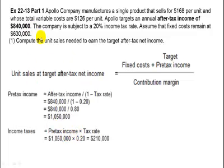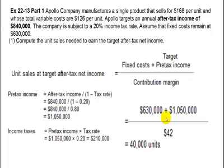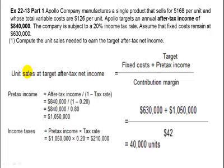Now we can solve Part 1. It's the fixed costs of $630,000 plus the target pre-tax income of $1,050,000 — these two pieces are costs you must overcome to meet the target — divided by the contribution margin of $42. The contribution margin of $42 is the selling price of $168 minus the $126 variable cost. This gives you 40,000 units needed to reach the target after-tax income. That's Part 1.